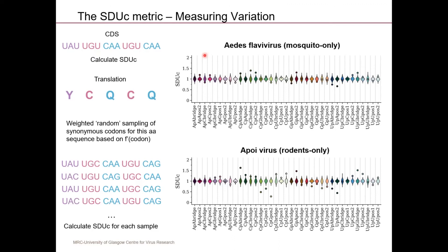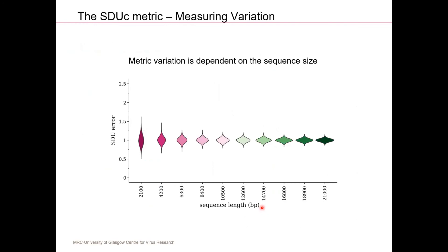Coming back to the flavivirus example: here are all the possible SDU values for the Aedes flavivirus, which only infects mosquitoes, and the Apoy virus, also a flavivirus but only infecting rodents. For the mosquito-only virus, the CpG values for all three positions fall within the null distribution, whereas for Apoy they are clearly underrepresented at all three positions. The variation of the null distribution depends on the amount of information — the longer the coding sequence, the tighter the distribution becomes.